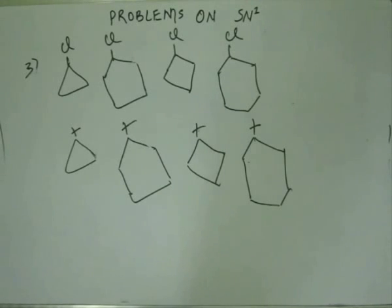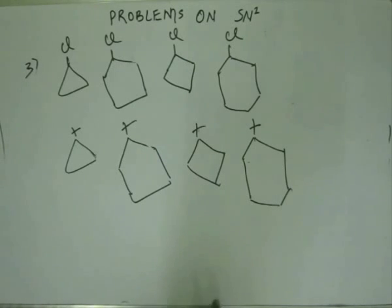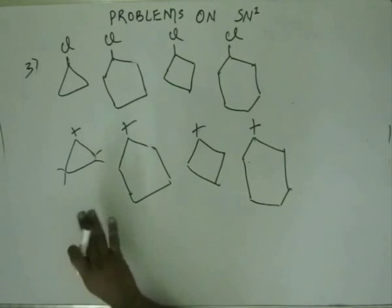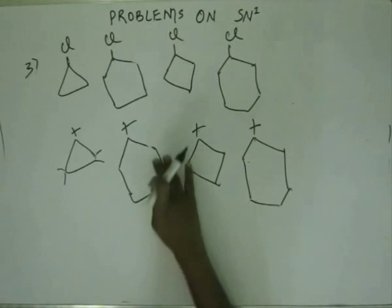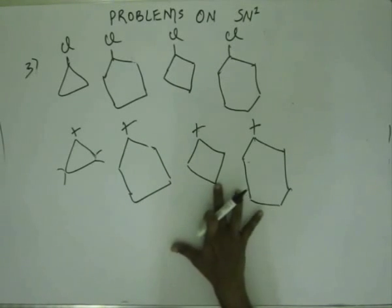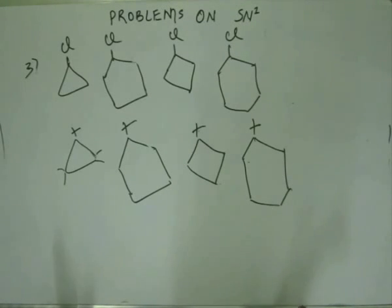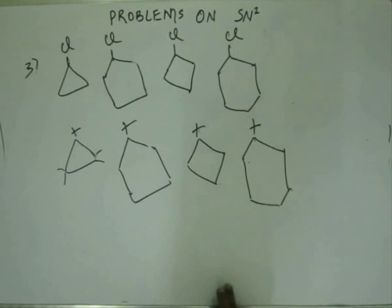Next we move down to hyperconjugation. For hyperconjugation we look at the number of alpha hydrogens. More the number of alpha hydrogens, more will be the transfer of electron from the sigma bond into the empty orbital, and more will be the stabilizing effect. So we count the number of alpha hydrogens. In this case we have two alpha hydrogens on both sides, so altogether four. Similarly, in all four cases you will have four. So the extent of hyperconjugation in all four cases is the same.